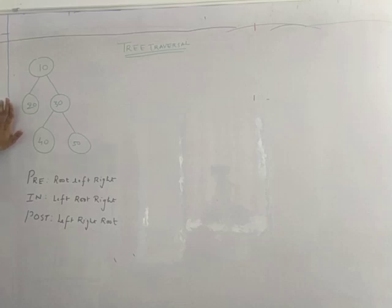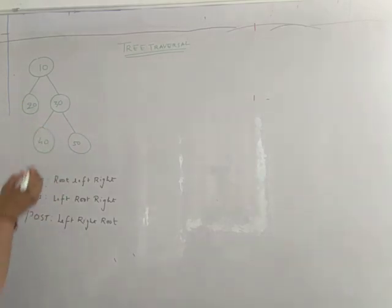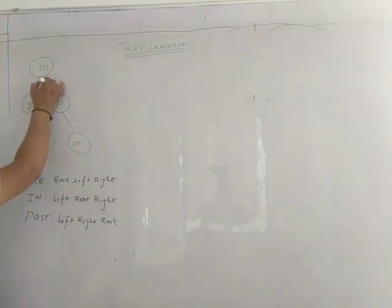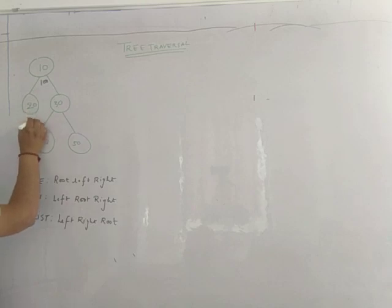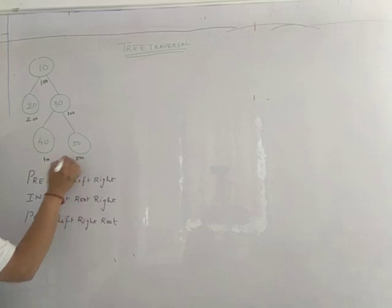So let me take an example. Suppose this is a binary tree with nodes 10, 20, 30, 40, 50. And the address corresponding to each node is 100, 200, 300, 400, and 500.